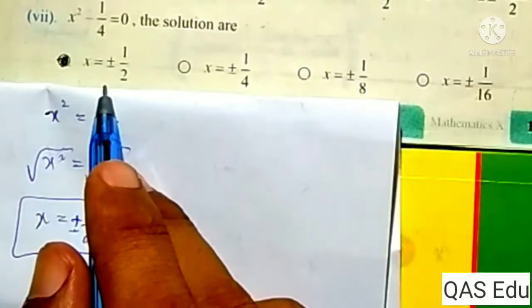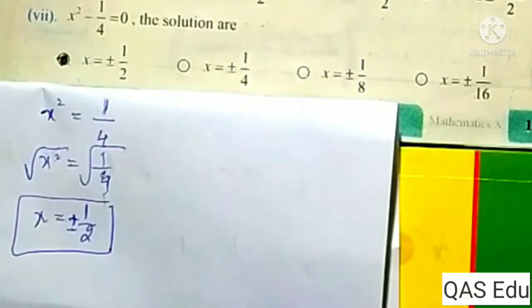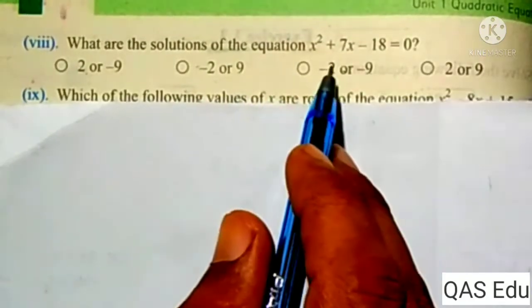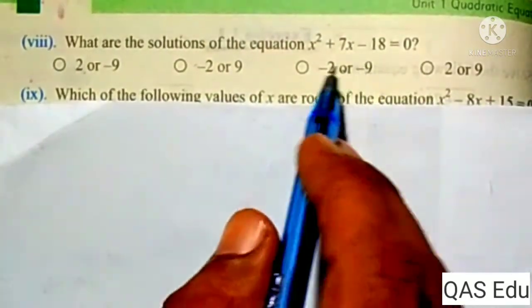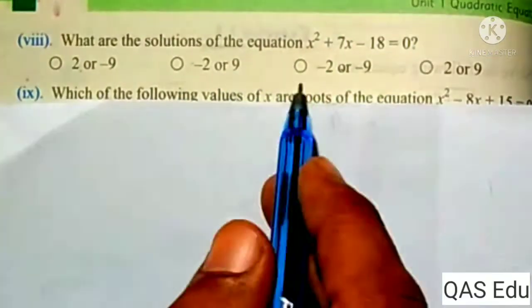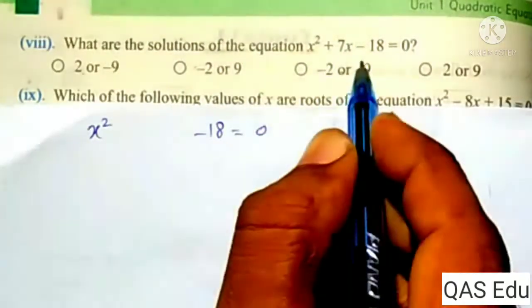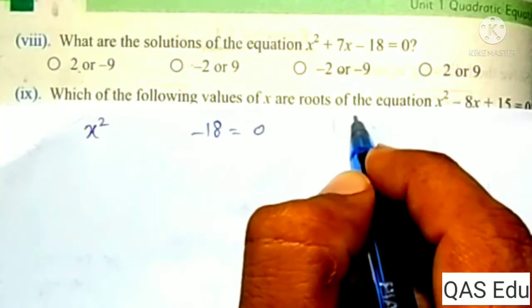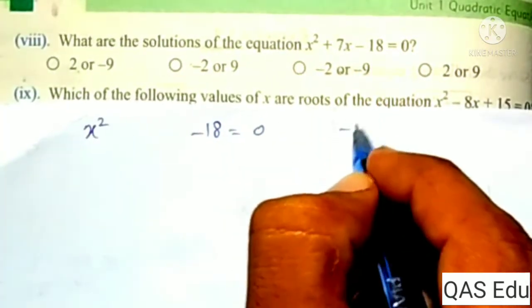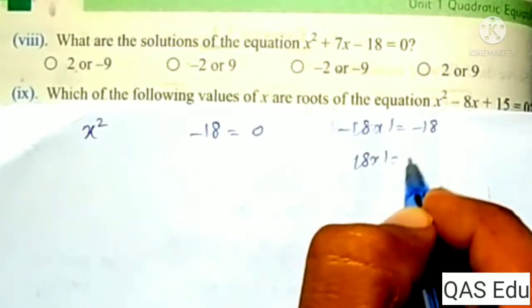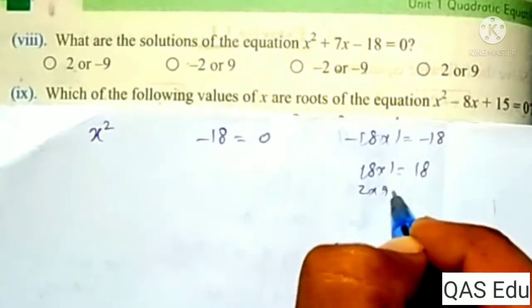What are the solutions of the equation x squared plus 7x minus 18 equals 0? We use the factorization method. We need two numbers that multiply to minus 18 and add to plus 7. Factors of 18: 18 times 1 is 18, 2 times 9 is 18, 6 times 3 is 18.